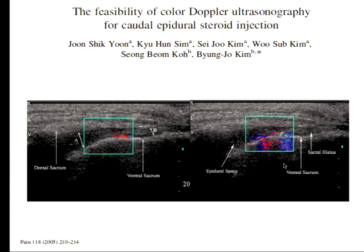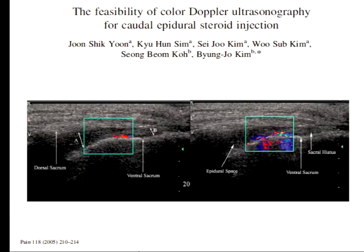What is still missing is a head-to-head comparative study — nothing has yet been published. The study I referenced on Doppler use for identifying intravascular versus epidural placement showed that, in their patient population where sacral depth was hardly one to two centimeters, they were able to clearly demonstrate that epidural steroid injections can be performed safely with just ultrasound and Doppler.